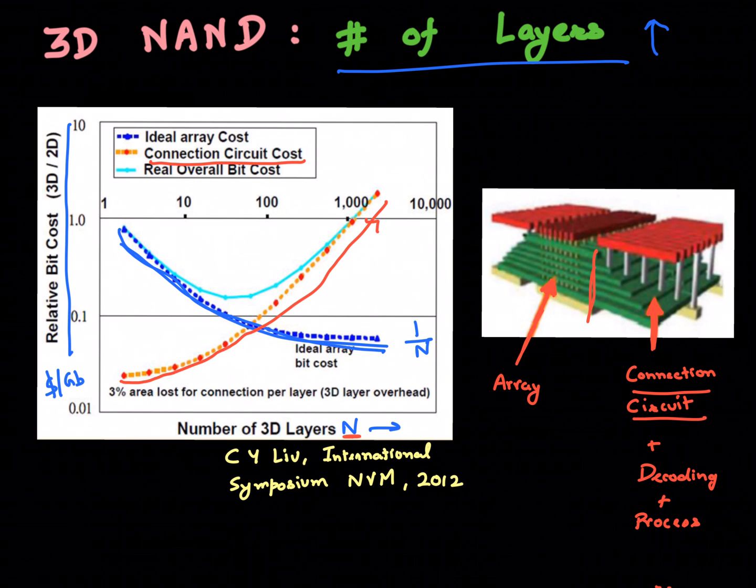You have to take both of these things into account. As you increase the number of layers, the overall characteristics might be somewhat similar to this U-shaped curve which hits a bottom at a certain number of layers. But if you go beyond that, then actually your relative bit cost or your dollar per gigabit number actually increases.